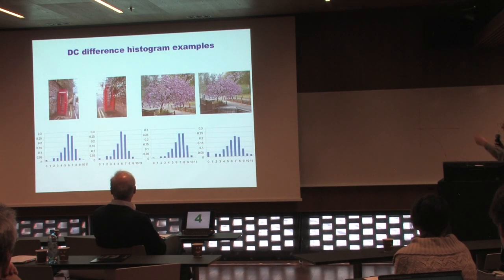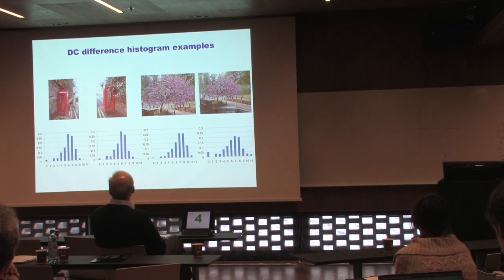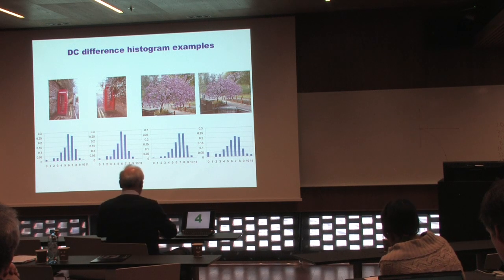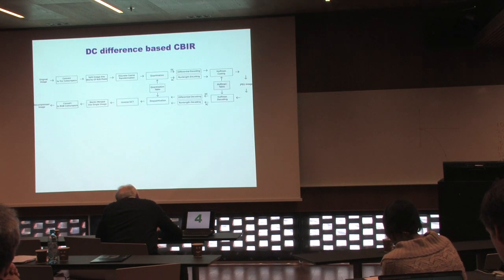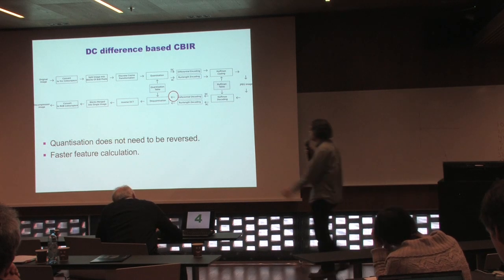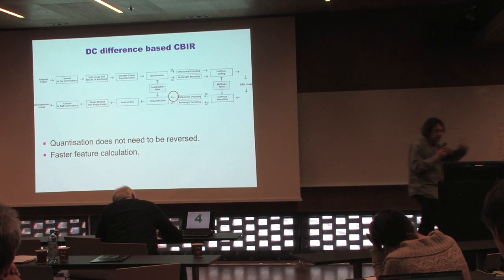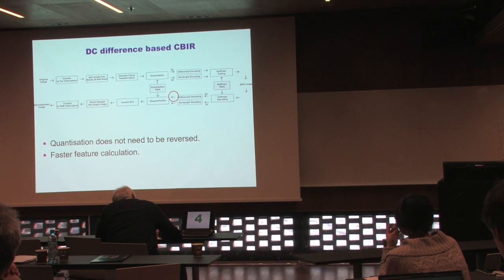As an example, we show DC difference histograms for two pairs of images. Visually similar image pairs show clear visual similarity, and this is reflected in the histograms extracted from them. Since we retrieve features from DC difference data, we intercept the data stream even earlier in the pipeline than the DCT stage, making the process slightly more efficient.